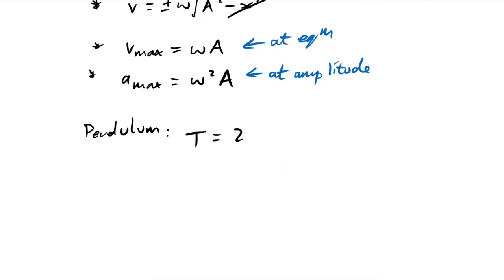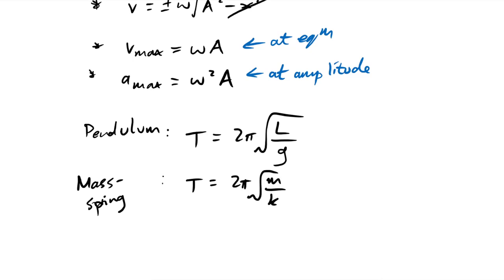For a simple pendulum, the time period is T = 2π√(L/g), where L is string length and g is gravitational field strength. Notably, mass doesn't appear, so time period is the same regardless of mass. For a mass-spring system, T = 2π√(m/k), where k is spring constant. Here g doesn't appear, so the period is the same whether on Earth, the Moon, or in space.